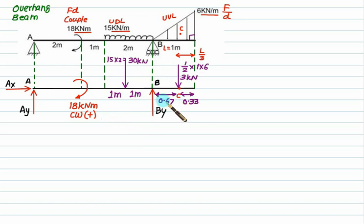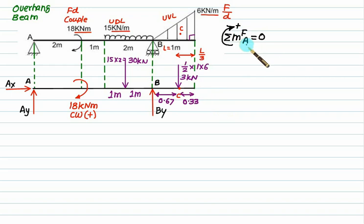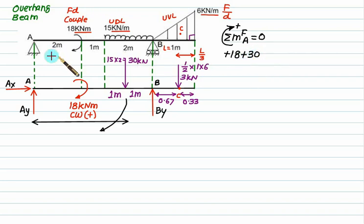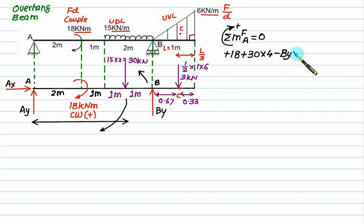Now we are ready to find the reactions. First, take the sum of moments of all forces about the fixed support A, with anticlockwise positive and total equal to zero. The forces Ax and Ay pass through point A, so they cause no moment. The couple is clockwise, so it is plus 18. The 30 kilonewton load makes a clockwise rotation about A, so it is positive: 30 multiplied by its perpendicular distance. By will rotate anticlockwise, so it is minus By.